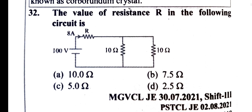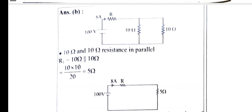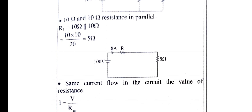The value of resistance R in the following circuit. Let's look at this figure. Here we have 10 ohm. We have two 10 ohm resistances in parallel: 10 ohm parallel gives 10 into 10 divided by 20, that is 5 ohm. Let's draw the circuit — 5 ohm.